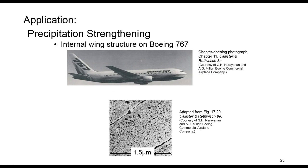An application of precipitation strengthening is shown in the internal wing structure of this Boeing. Here, aluminum shown here is strengthened with precipitates formed by alloying. This is the microstructure of the aluminum used in the wing structure of this Boeing.